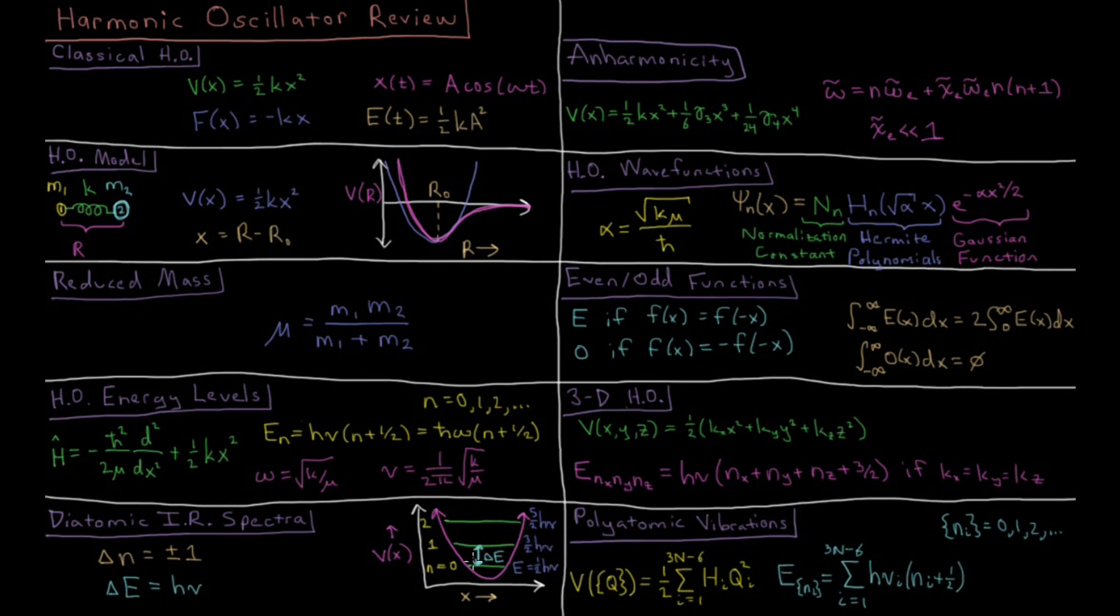Using this model system in these energy levels, we can model the infrared spectra of diatomic molecules, their vibrational spectrum. We have our ground state at n equals zero, which most molecules exist in at room temperature because these energy levels are quite far spaced apart.